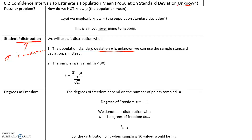Let's talk about the degrees of freedom. The degrees of freedom depend on the number of points sampled — it depends on the sample size. So for a sample size n, the degrees of freedom is equal to n minus 1. We denote a t-distribution with n minus 1 degrees of freedom as t sub n minus 1. For example, the distribution of x-bar when sampling 30 values would be t sub 29.